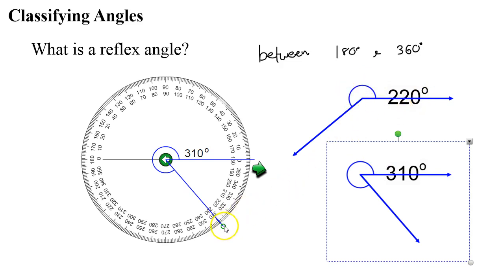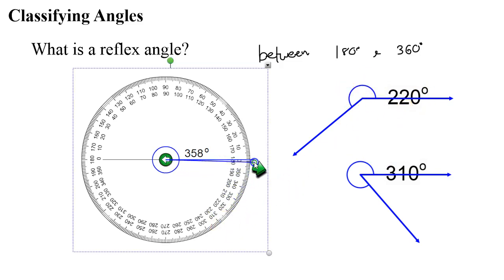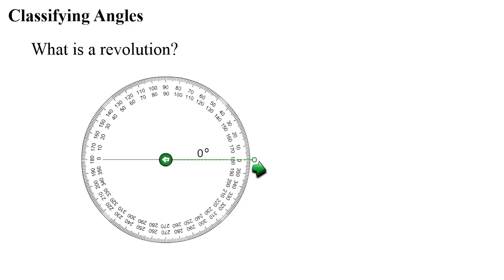So what happens when we reach 360 degrees? Well, that brings us to our final classification of an angle which is called a revolution. A revolution is exactly 360 degrees. It is when you make a full circle.